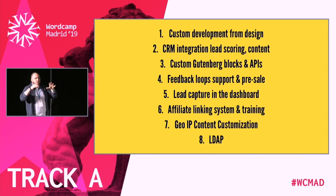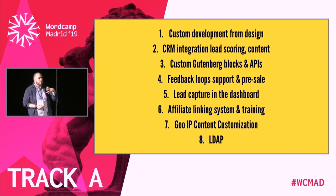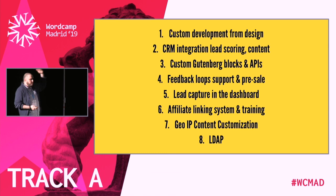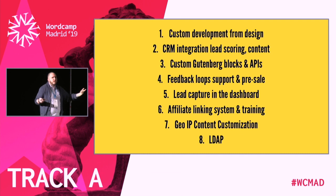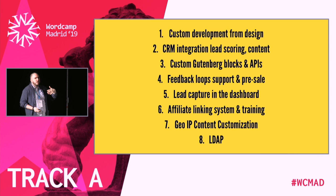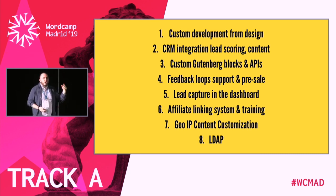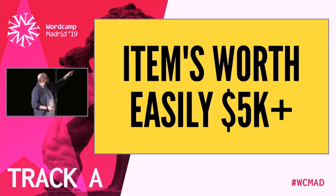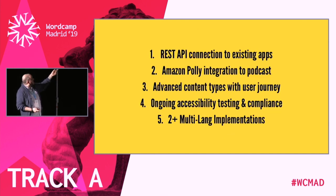Custom development beyond design: CRM integration with lead scoring — if they visit certain pages, score them as a hot lead. Custom Gutenberg blocks and APIs. Feedback loops and pre-sale: nothing worse than filling out a form and nothing happens — customers want a receipt. And one of my favorite things to sell now: I worked with a beauty salon and sold them an affiliate linking system. They said, 'We can't get people to buy our products, they just buy on Amazon.' We had their stylists list favorite products and auto-affiliate linked using Thirsty Affiliates.